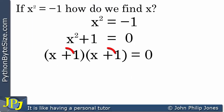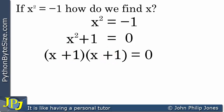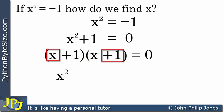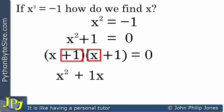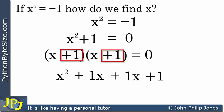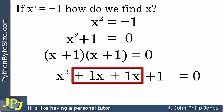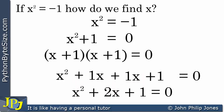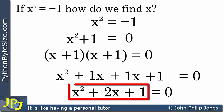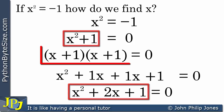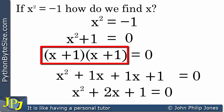Now I'll consider the final possibility — a plus sign in both cases. Expanding: x times x gives x squared, x times plus 1 gives plus 1x, plus 1 times x gives plus 1x, and plus 1 times plus 1 gives plus 1, all equaling 0. The two positive x terms add to give 2x, so we end up with x squared plus 2x plus 1 equals 0. That is clearly not x squared plus 1 equals 0, so these two brackets also do not give me what I required.